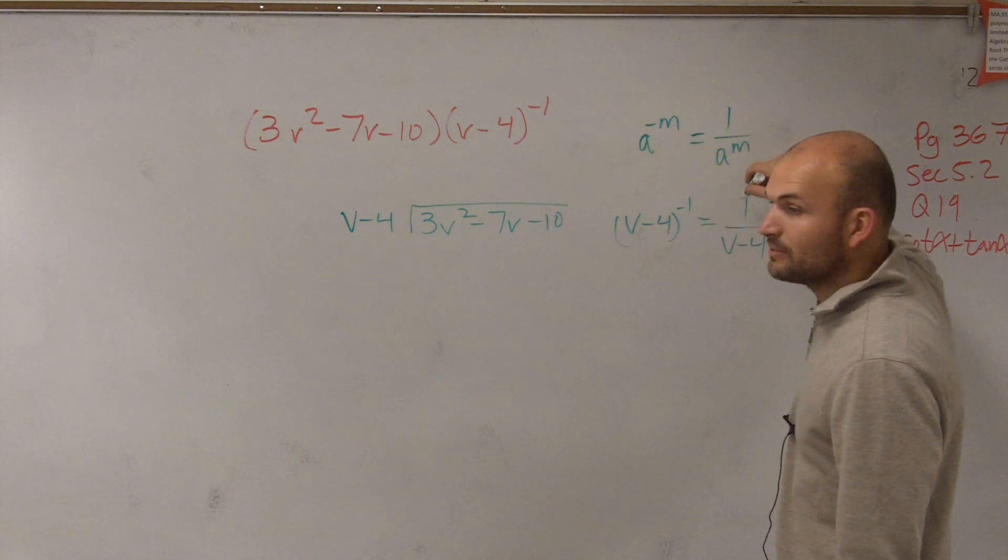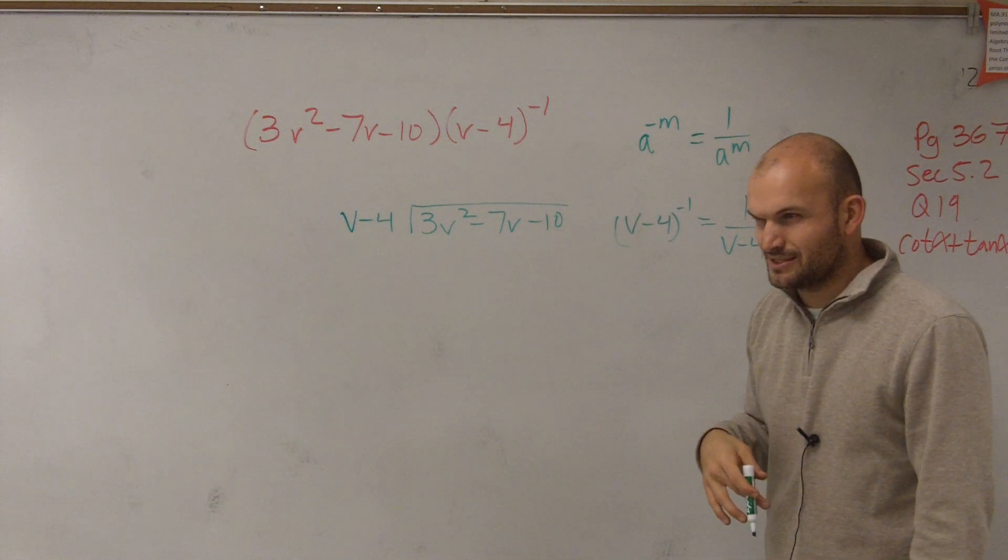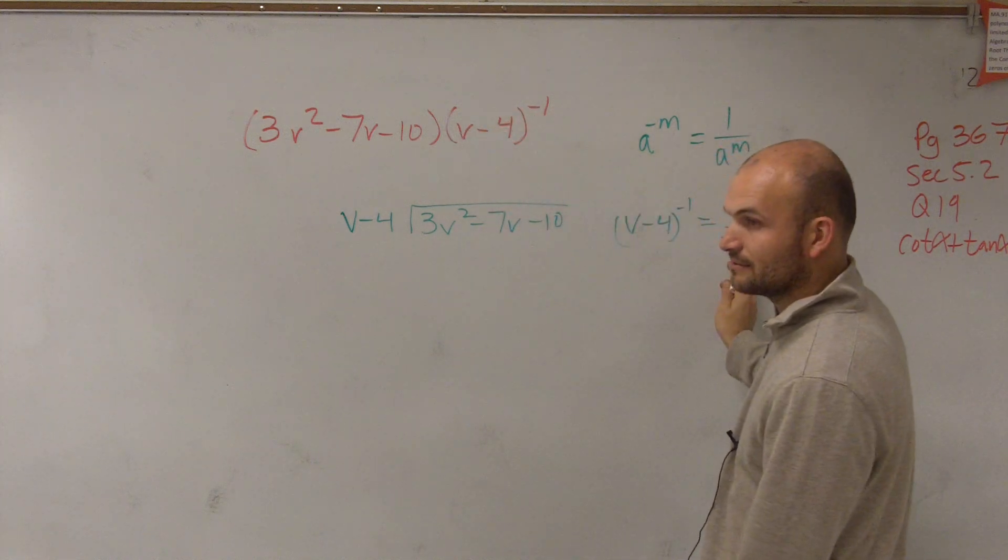So if you were to multiply with v minus 4 in your denominator, you're actually dividing it. Does that make sense? Do you understand how this is equal to that? Yes.